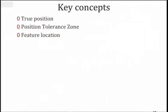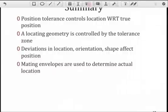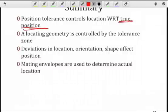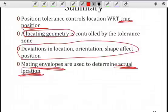At this stage, you should understand the notion of true position — that is the nominal location that we're trying to control. You should know what a position tolerance zone looks like in terms of shape, size, orientation, and position, and how we actually locate the feature we're trying to control. In summary, you're going to have to have a datum reference frame — that's how we locate our true position. The locating geometry on the feature is controlled by the tolerance zone. Deviations in location, orientation, and shape are cumulative — they all contribute to the position of a feature. Mating envelopes are used to determine the actual location without orienting the mating envelope.